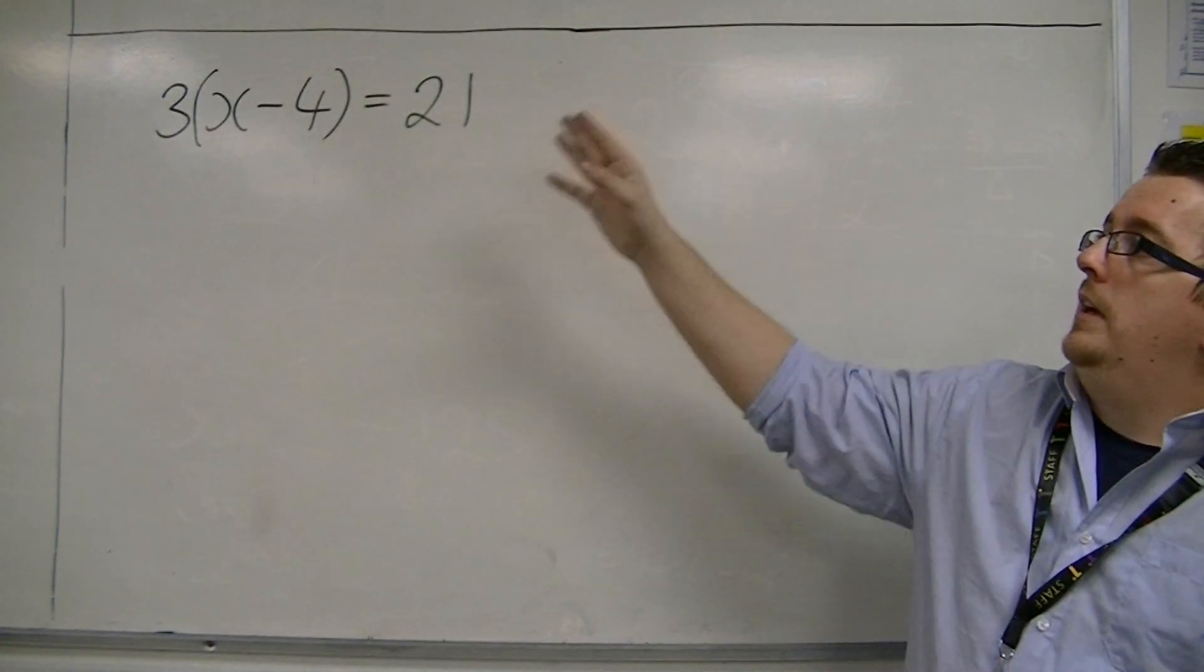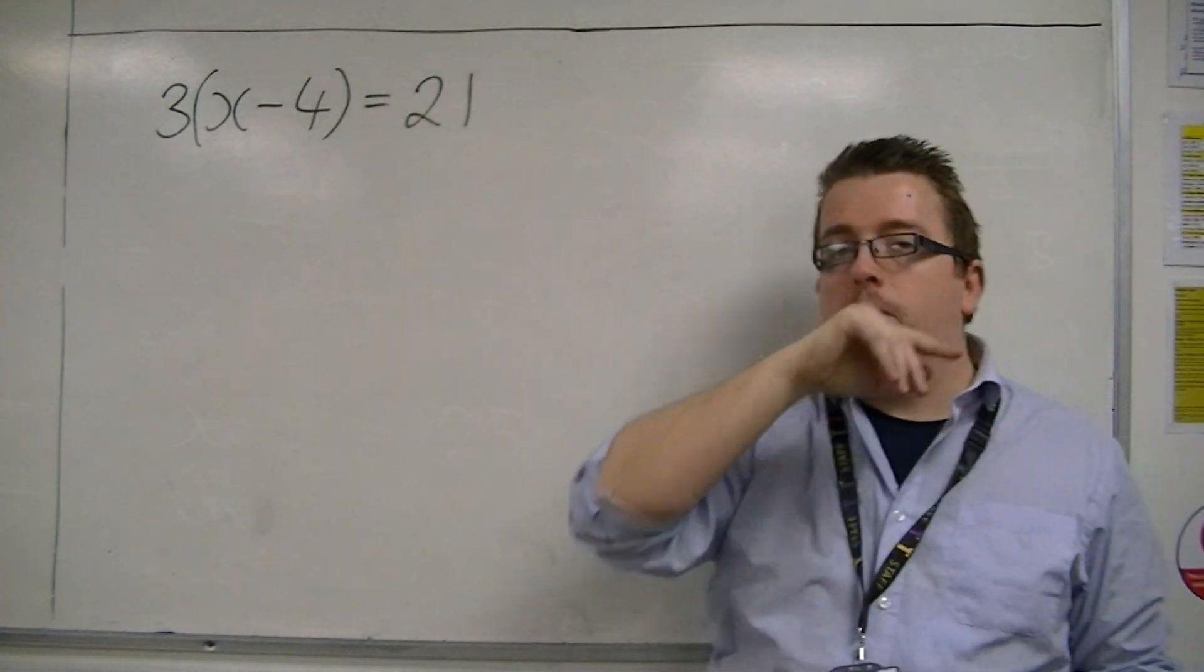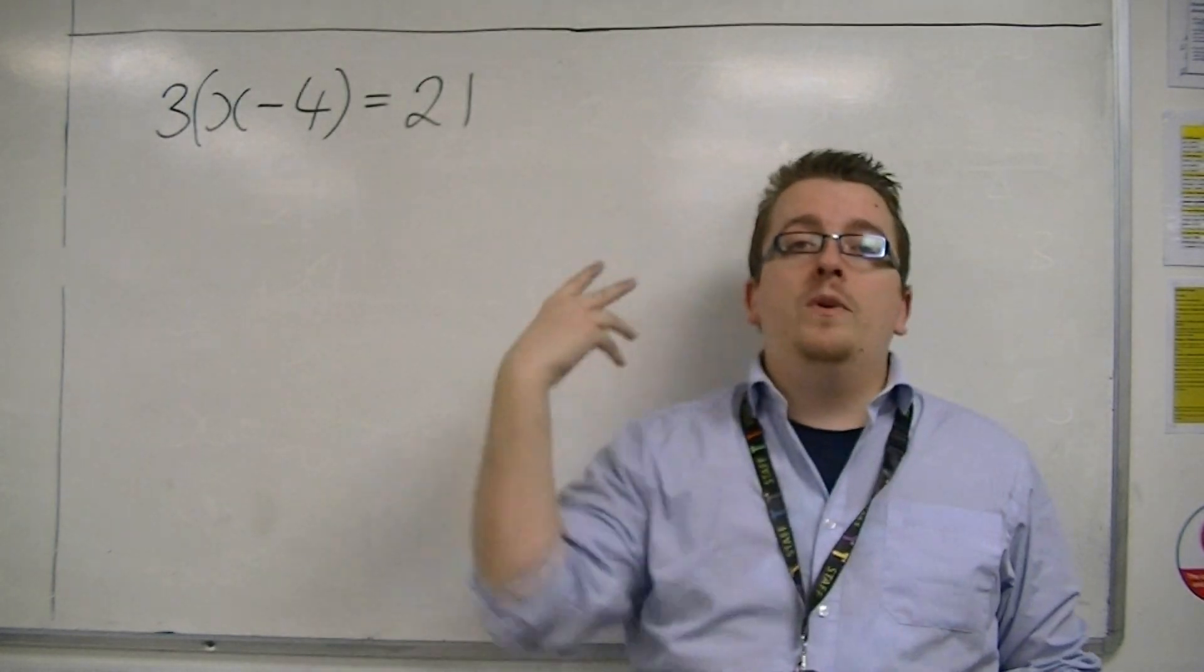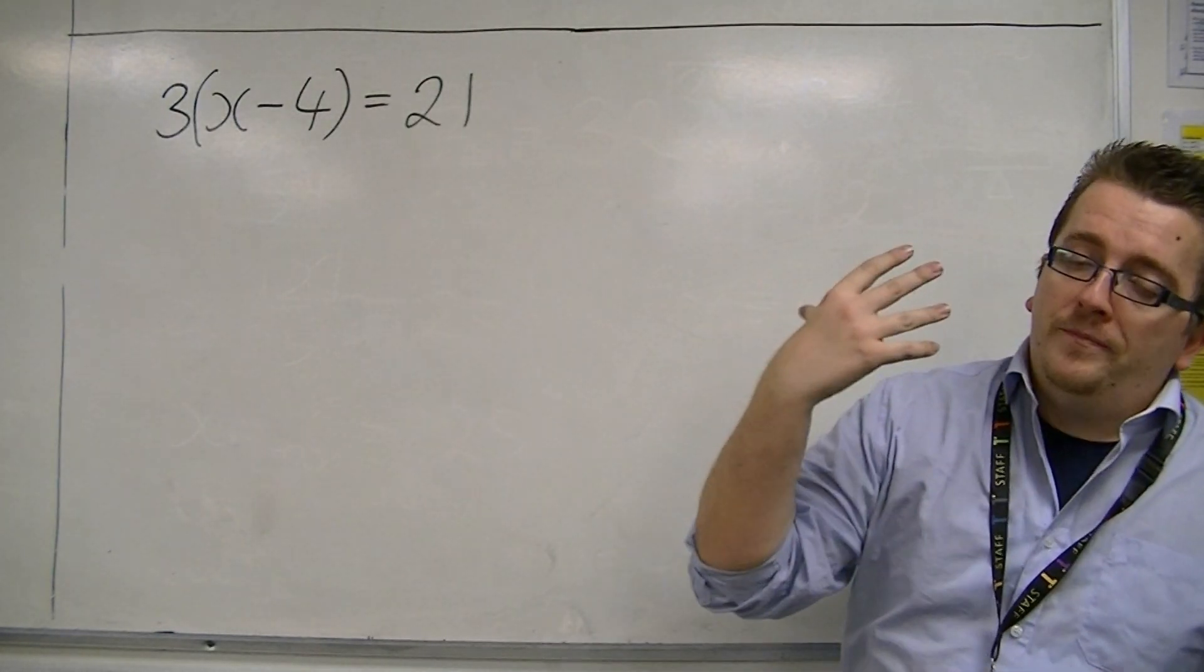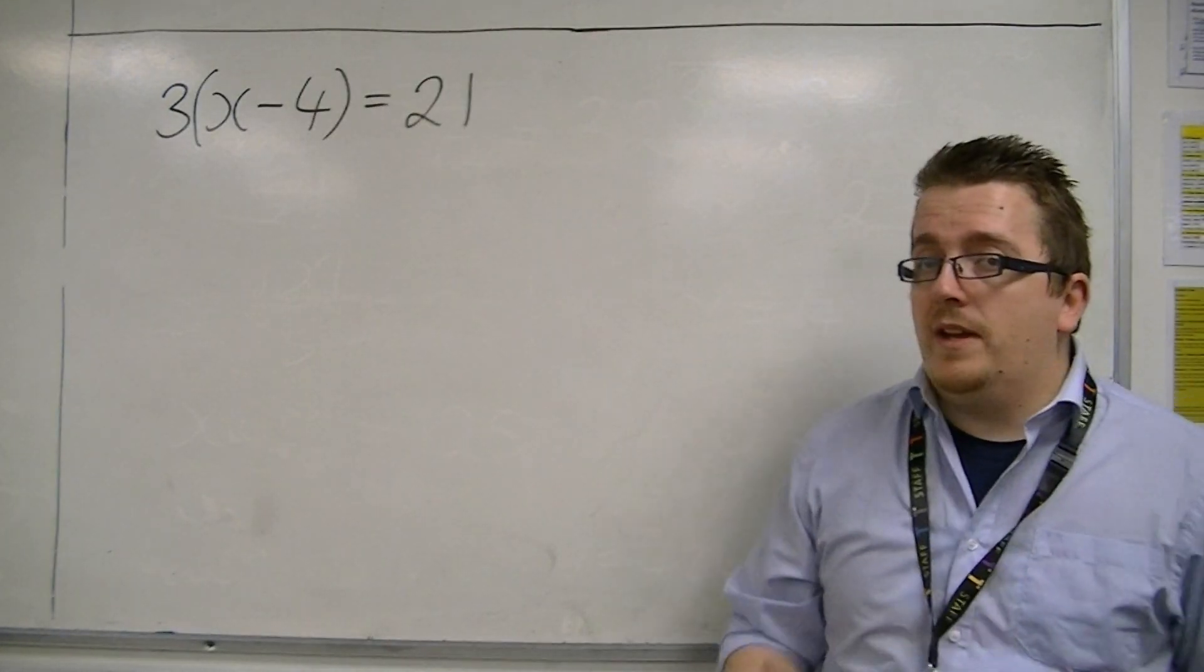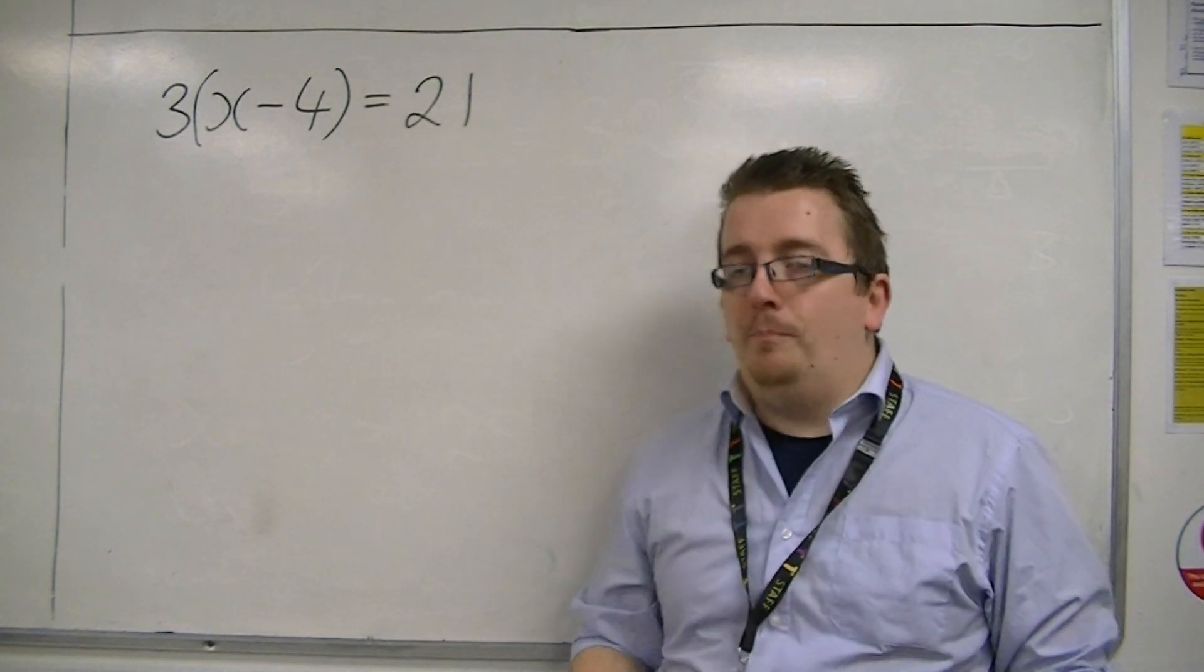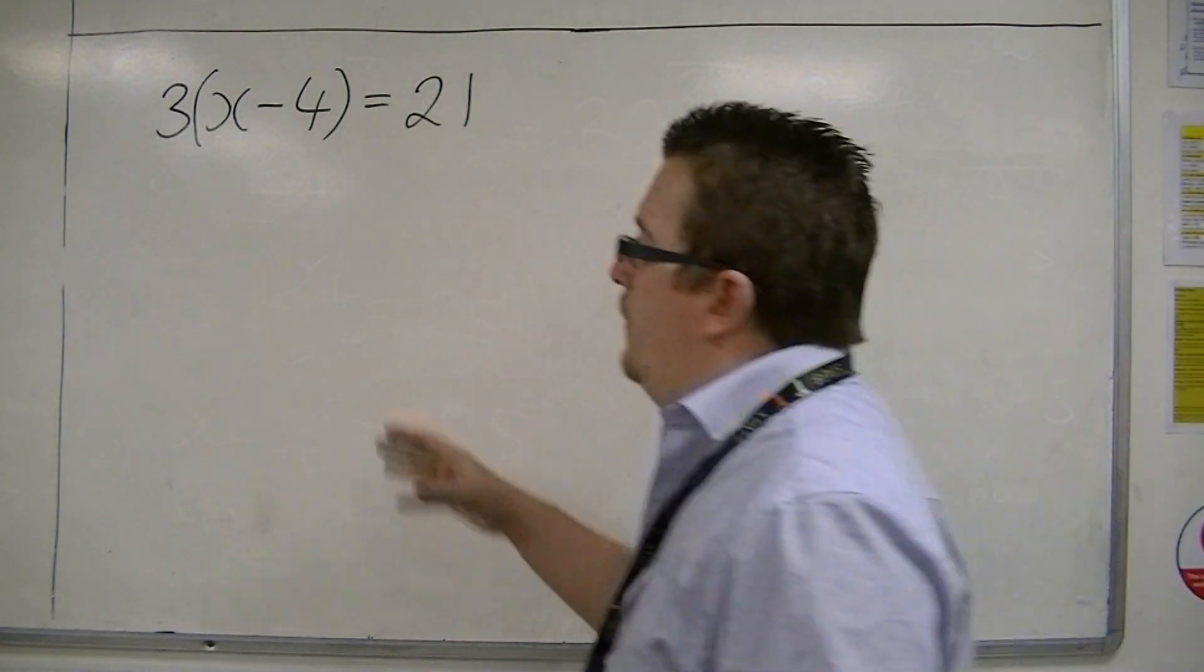So three lots of x minus four is equal to twenty-one. Now, what do we do with brackets? We expand them. And in the majority of cases, that's probably going to be our best bet. So we're going to expand this bracket out.